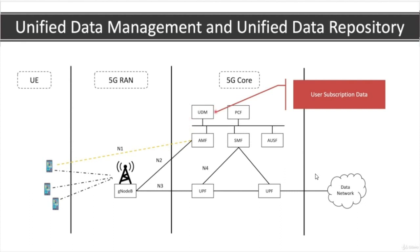We now come to the UDM and the UDR. The user subscription data is stored in the user data repository, or UDR. The UDM is the front end for that subscription data. The AMF does not contain user subscription data directly, so the UDM supports the AMF in access authorization, registration management, and similar processes. For example, a device may not have roaming privileges or might be barred — this kind of information is stored in the UDM, which provides access to it when necessary.